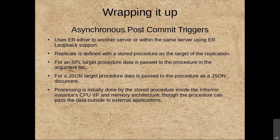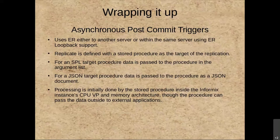Asynchronous post-commit triggers use ER — either another server or loopback within the same server. The replication is defined to replicate to a stored procedure as the target instead of a table, although the table has to exist on the target. For SPL targets, data is passed into the procedure as an argument list; for JSON target procedures, data is passed as a JSON document; and C procs receive a binary record. Processing is initially done by the stored procedure inside the Informix instance in the CPU VP using the engine's memory architecture, but the procedure can pass data to external applications via message queues, shared memory, or any other method.